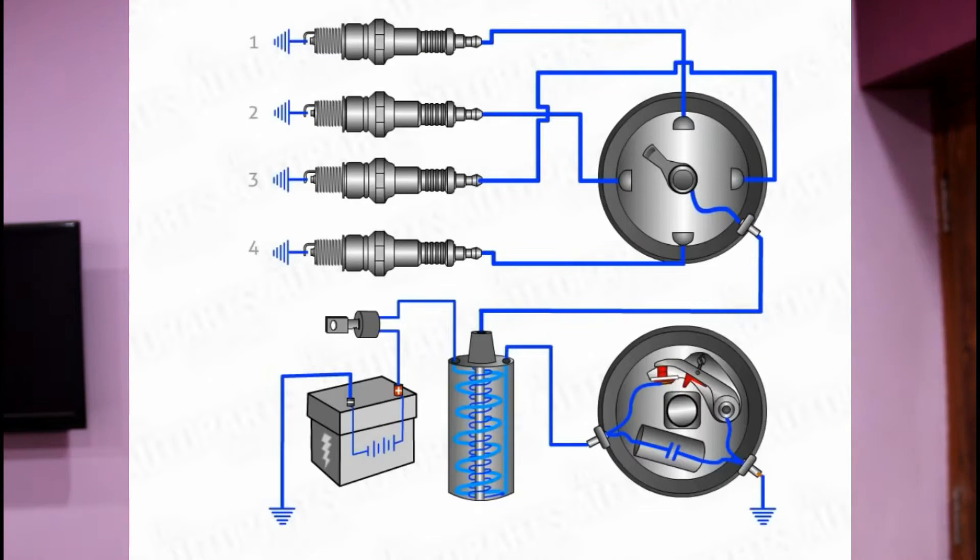Hello everyone and welcome back to our channel Archy Automobile, a YouTube channel on which we discuss each and every part of an automobile. Today we are going to discuss a very interesting topic: the ignition system of an IC engine. You all know that combustion takes place inside an engine cylinder, and it is because of the ignition system that this combustion takes place.